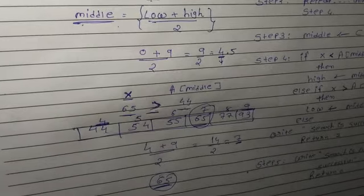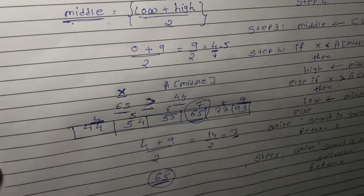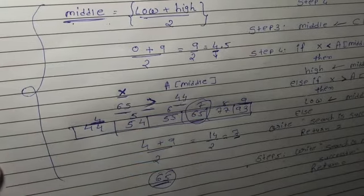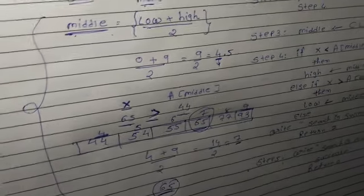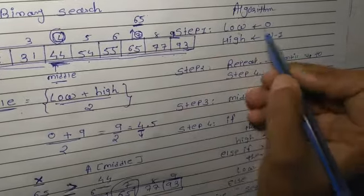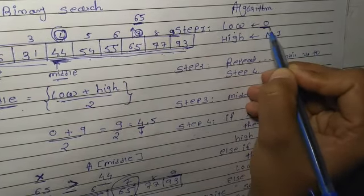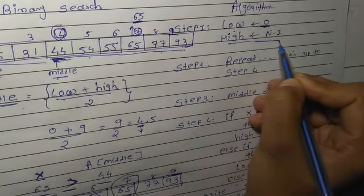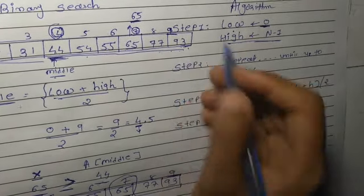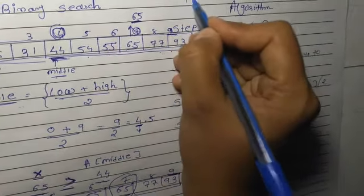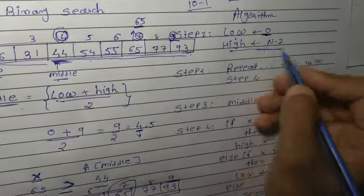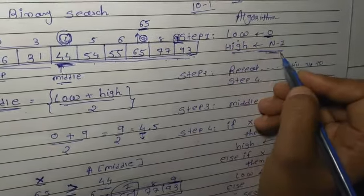This is the method — this is the binary search method for finding data. Now in the algorithm, step number 1: first set low position to 0, and high position to n-1. n-1 because total 10 data are there, but 10-1 gives position 9 — so we write n-1.